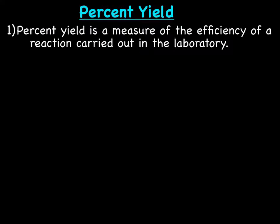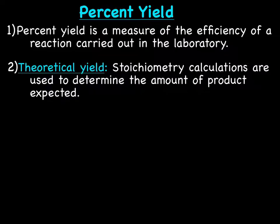Percent yield: what is it? Percent yield is a measure of the efficiency of a reaction carried out in the laboratory, basically how well does the reaction happen. So far what we've been calculating is theoretical yield. Theoretical yield is stoichiometry calculations used to determine the amount of product expected. So it's a prediction, a calculation and a prediction.